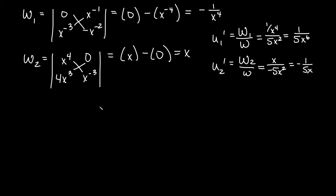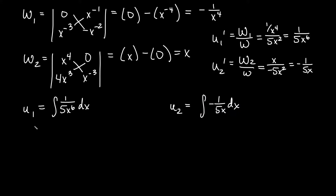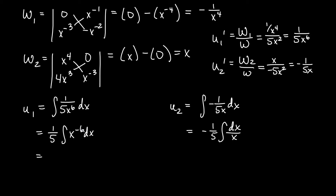Now we need u1 and u2 by integrating. u1 is the antiderivative of 1 over 5x to the 6 dx, which we can write as one-fifth times the integral of x to the negative 6 dx. Using the power rule, the power goes up by 1 and we divide by the new power, giving us negative 1 over 25 times x to the negative 5. For u2, the antiderivative of negative 1 over 5x is negative 1 fifth times ln of x.